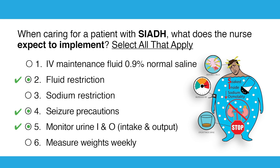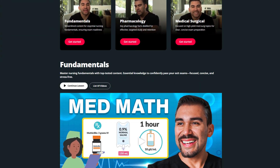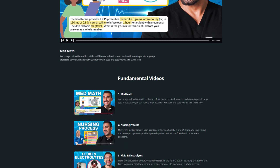And lastly, if you chose option six — measure weights weekly — you are completely wrong. We're measuring daily. NCLEX will try and trick you. Weight gain means water gain. Always daily.